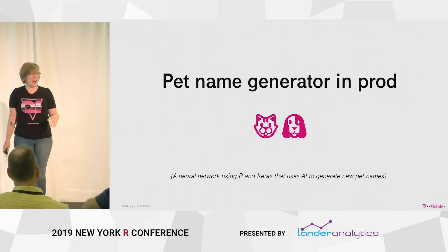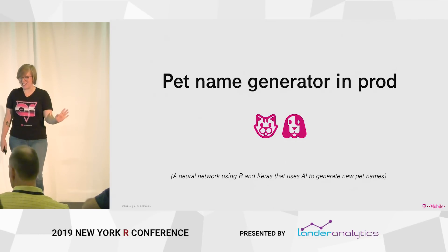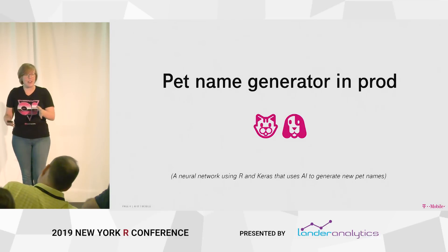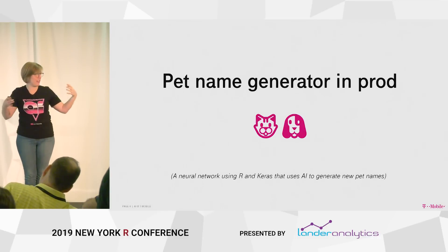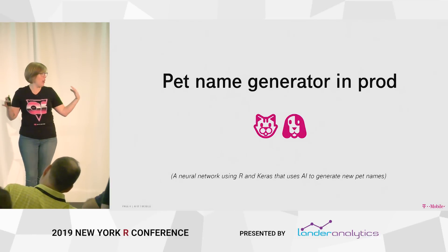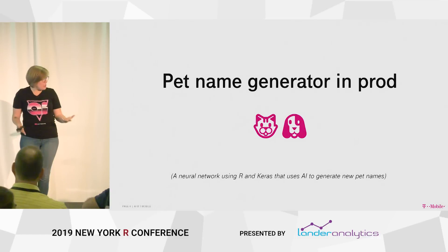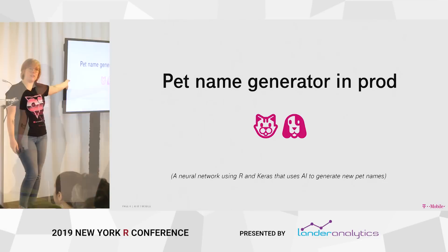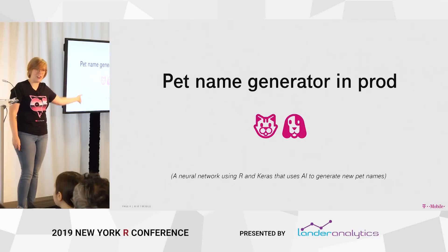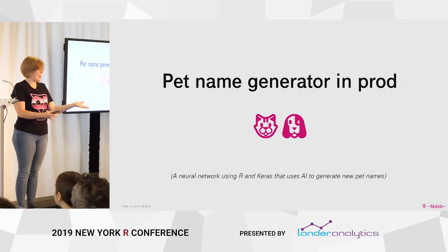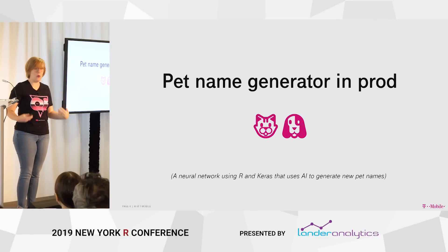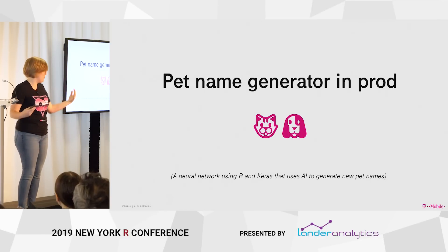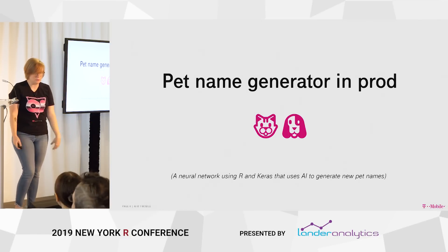I'm piggybacking off of Jacqueline's presentation yesterday. We're going to take the pet name generator, the big TensorFlow deep learning model that she created, and we are going to put it into production in my talk. So if she handed me this code, what are the things that I would have to do to make it actually run scalable at T-Mobile?